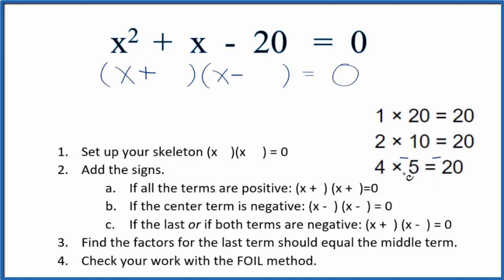But if we had -4, that would give us -20. 5 plus -4 gives us positive 1, so we're going to say -4 and positive 5.